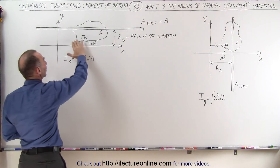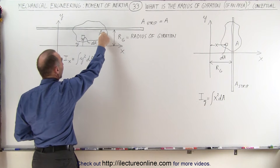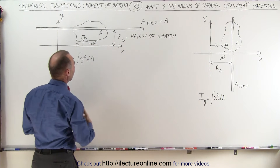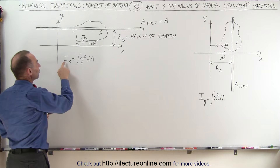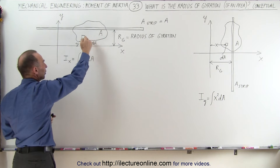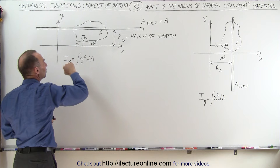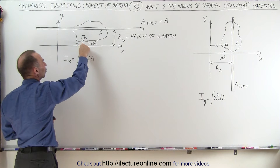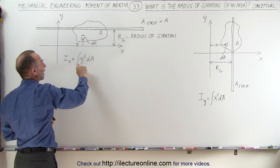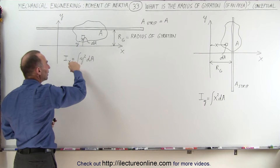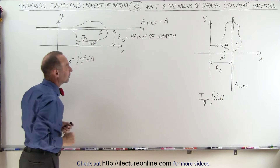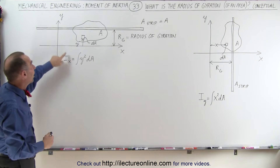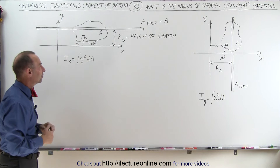Let's say that we have a certain area equal to A, and it's some distance away from the x-axis. If we're going to try to find the moment of inertia of this area relative to the x-axis, we take a small little area element. We then multiply that times the distance to that element squared — this distance is y — so we have y² dA. Then we integrate that over the entire area. That gives us the moment of inertia, or the second moment of area, of this particular area relative to the x-axis.